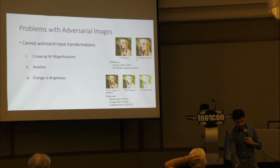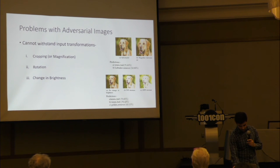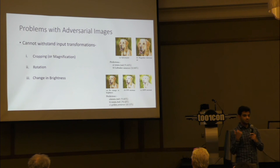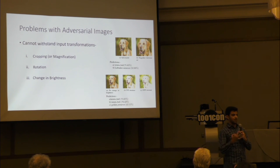Same thing for brightness — it gets misclassified as a tennis ball with 75% confidence, and increasing brightness by 50% still gives tennis ball at 76%. But if you increase the brightness too much, it switches back to its original class. Adversarial images are scary, but if they cannot withstand changes in brightness, cropping, or magnification, how can they exist in the real world?